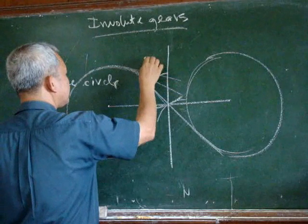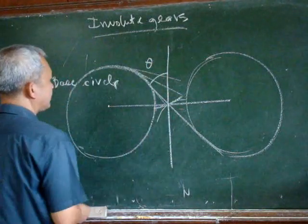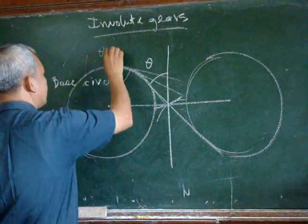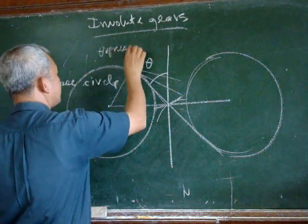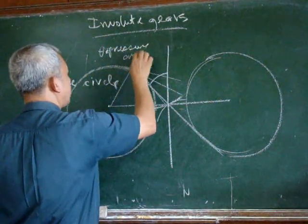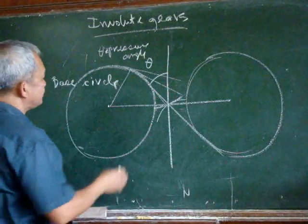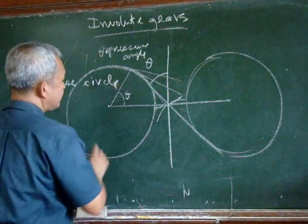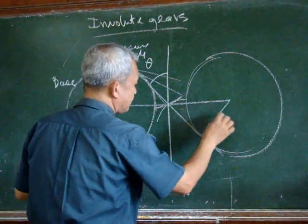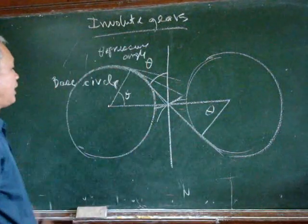And this gear or this angle is called the pressure angle. Yes, pressure angle. And we can easily say that this is equal to theta and this is also equal to the pressure angle.